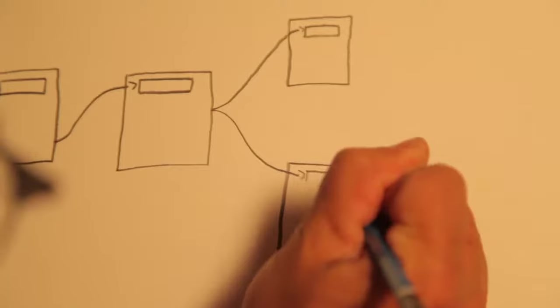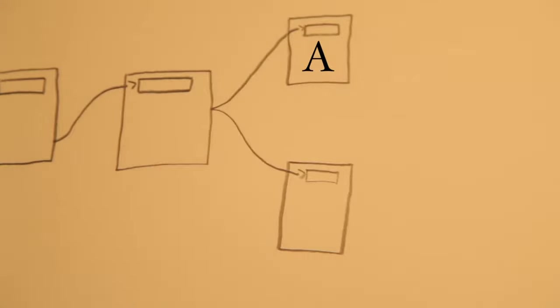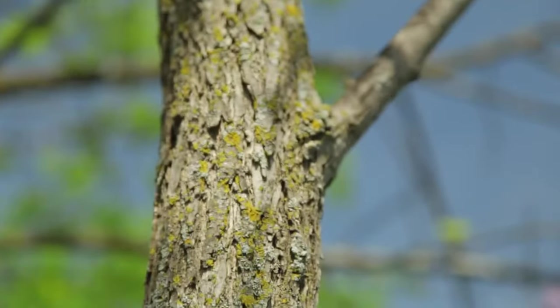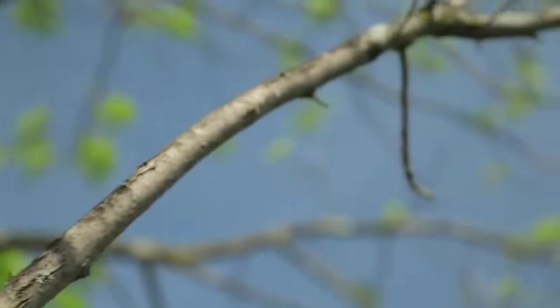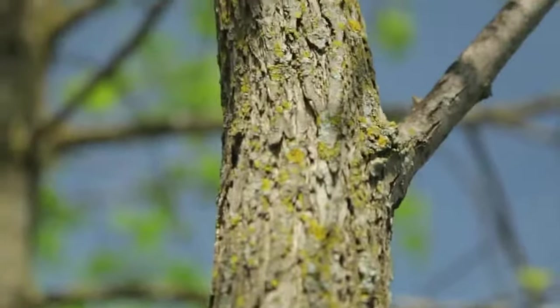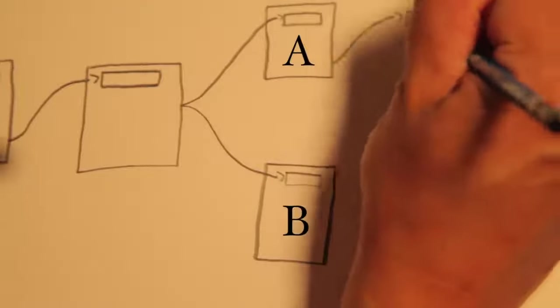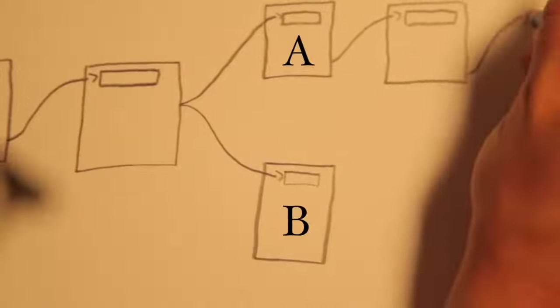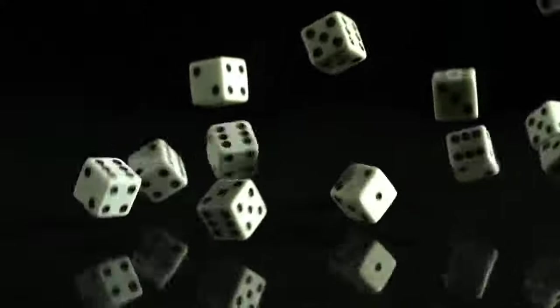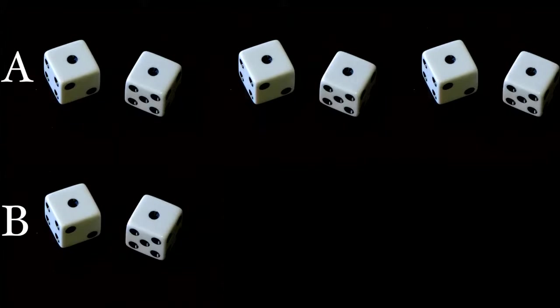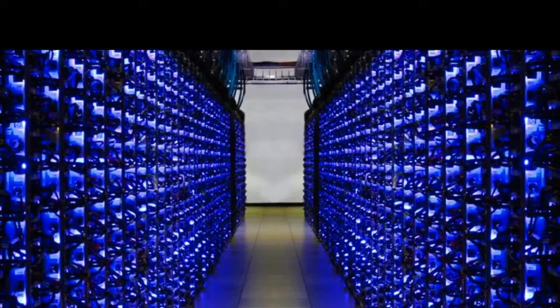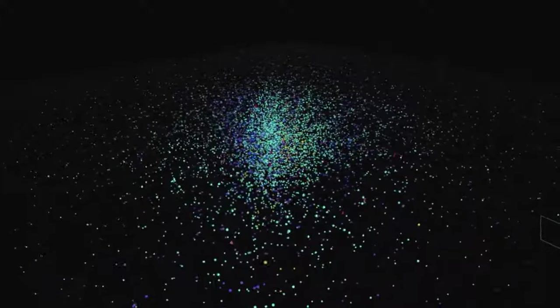Because let's say the majority of nodes believe block A was the most recent valid block. While only a small minority of cheating nodes believe in block B. And to determine which is actually the chain to trust, the nodes simply monitor which chain is growing faster. And because the majority has more collective guessing power, the chain through block A will grow faster than the chain through block B. It's exactly similar to why 10 people rolling dice will hit on snake eyes faster than one person over time. One person might get lucky and hit snake eyes once in a while. But over time, the majority will always hit snake eyes more often. And this works because no one computer or entity is more powerful than the majority of computers on the Bitcoin network.